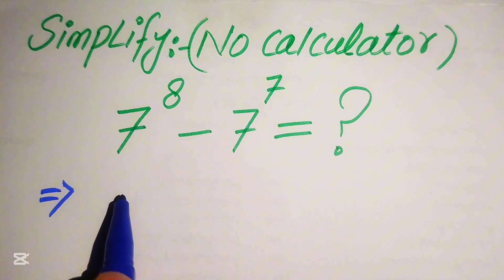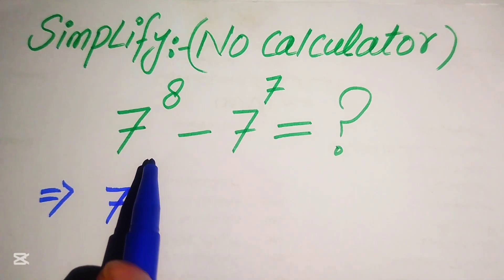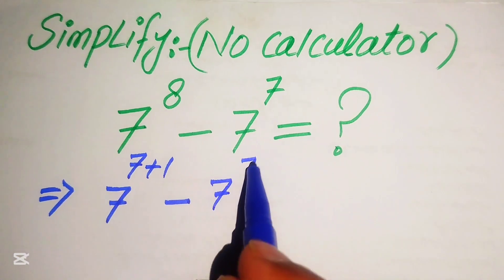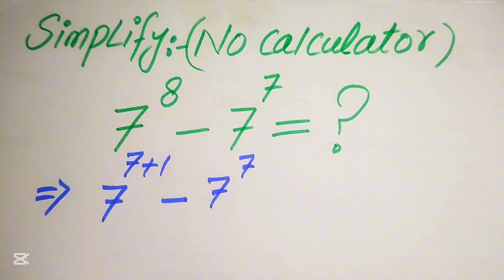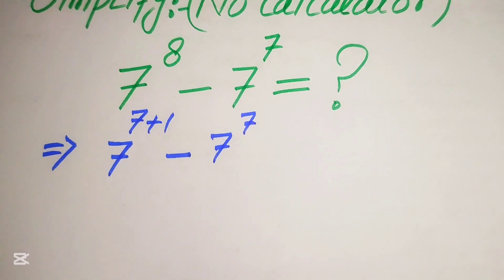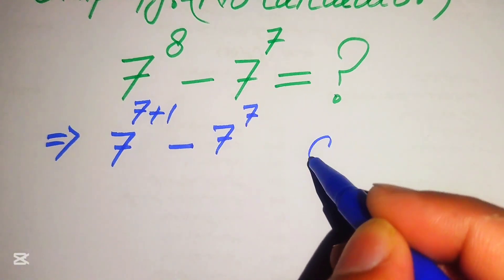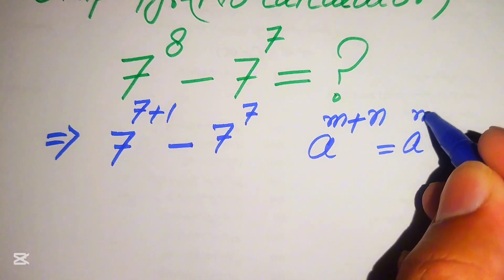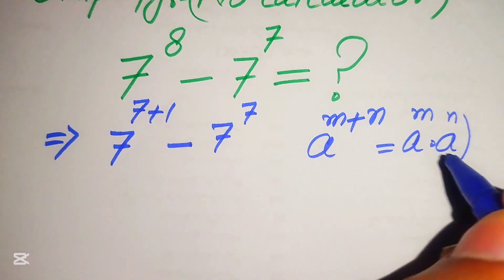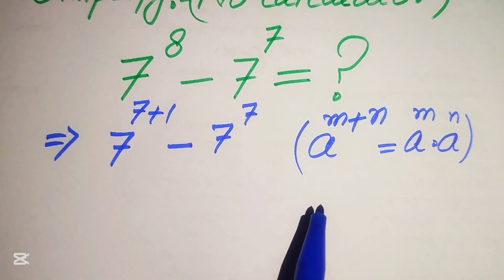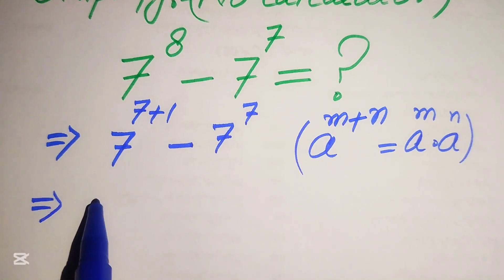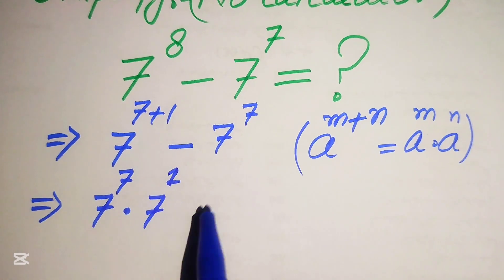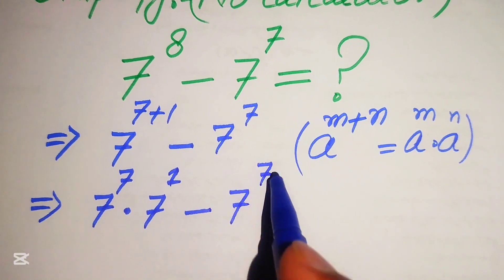The exponent of 7 is 8, and we rewrite 8 as 7 plus 1, minus 7 to the power of 7. We then apply the exponent law: a to the power of m plus n equals a to the power of m multiplied by a to the power of n. According to this law, we break the exponent and write it as 7 to the power of 7 multiplied by 7 to the power of 1, minus 7 to the power of 7.